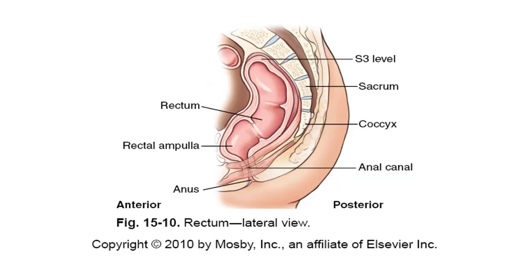The most distal portion, which follows the curve of the sacrum anteriorly, is the rectum. During a barium enema, the enema tip is placed through the anus into the rectal ampulla, then a balloon is inflated just past the anus, helping the patient to retain the contrast media for the duration of the exam.